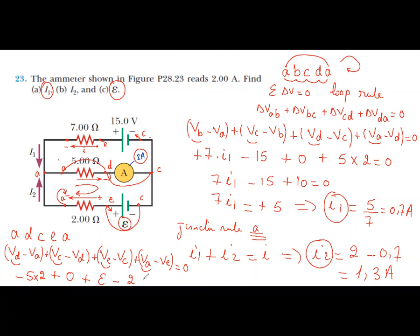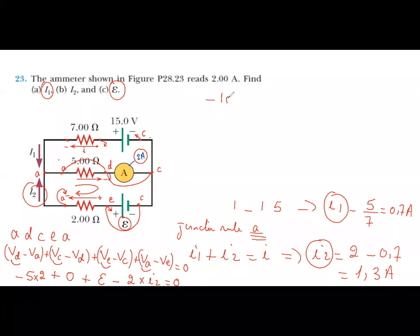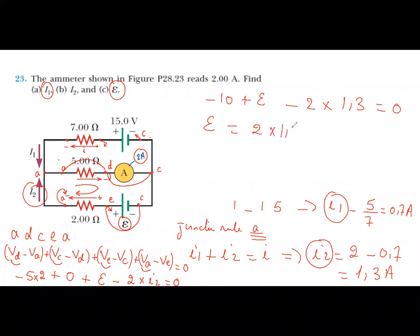Continuing around the loop: minus R times i2, where i2 = 1.3, equals zero. Solving: −10 + E − 2·(1.3) = 0, so E = 2 × 1.3 + 10 = 2.6 + 10. Therefore E = 12.6 volts.